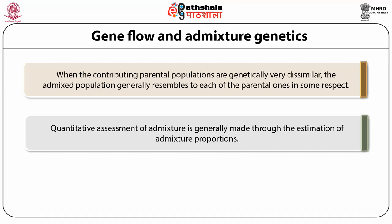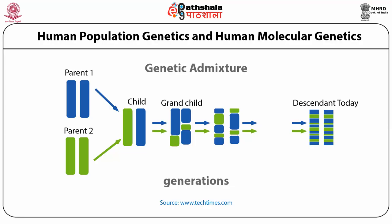For population genetic consideration, this conversion of proportion into rates is necessary in order to study the consequence of migration on the change of gene frequencies. The given figure shows the common features of both parents 1 and 2 in the child, and even after many generations, some traits of the parents are still observed in their descendants.